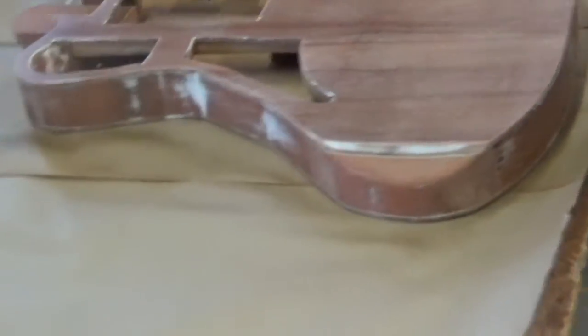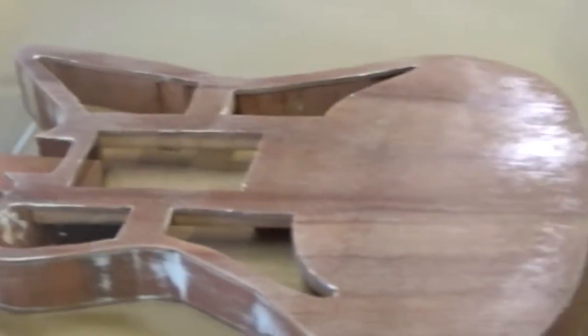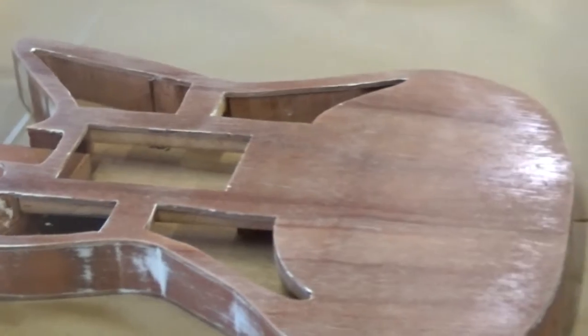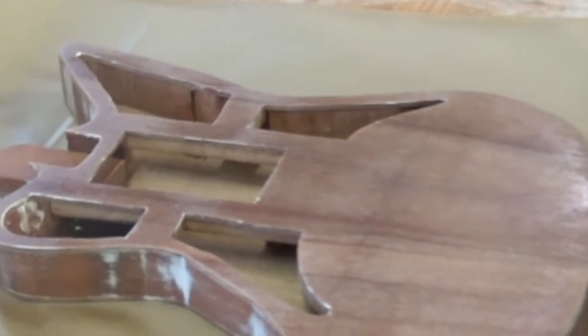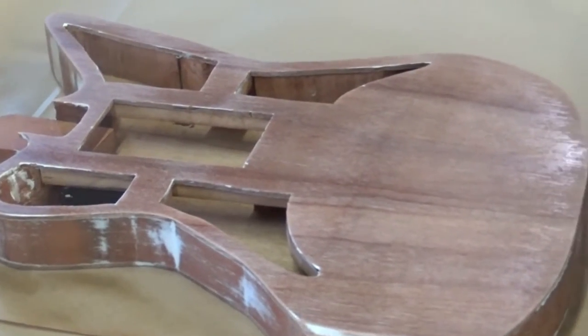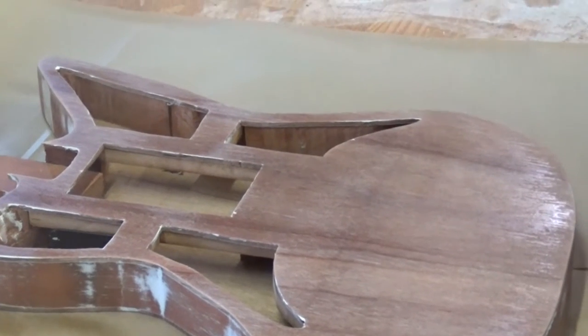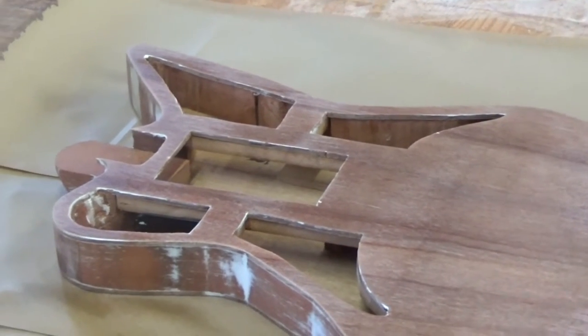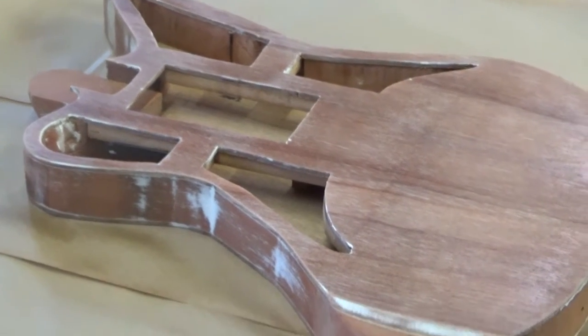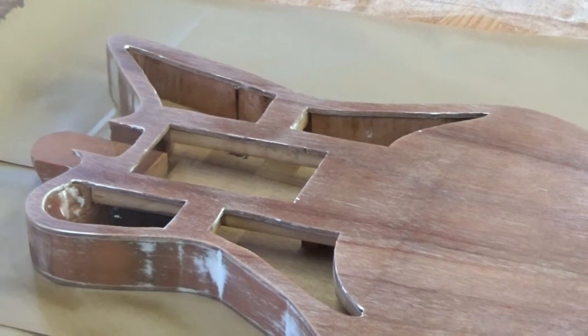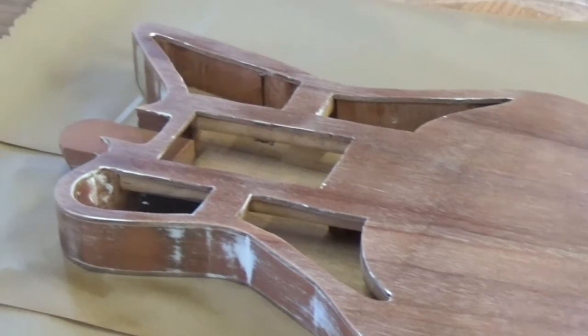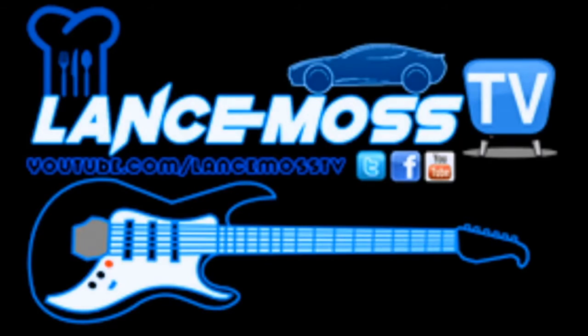That's it, alright. Well ladies and gentlemen, that is how you primer the body of the guitar with a rattle can. So if you have any questions or comments, put them in the comment section down below. Don't forget every Tuesday night I go live with Lance Moss TV and friends. I never know who's going to show up and well, we will see you next time. Subscribe to Lance Moss TV.